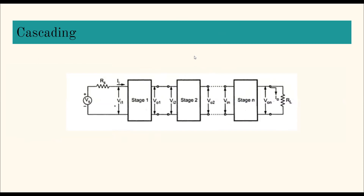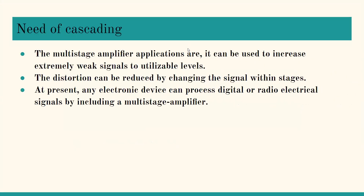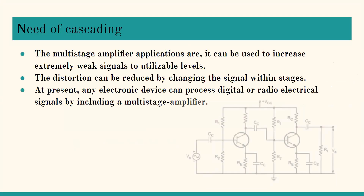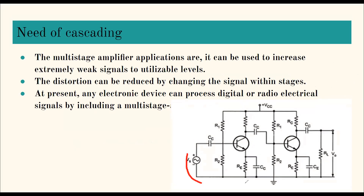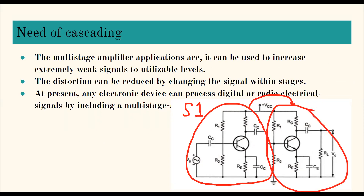A single stage CE amplifier is one stage. When this single stage is duplicated and cascaded, it becomes a two-stage amplifier. Looking at the circuit, Stage 1 connects to Stage 2 via a resistor and capacitor going to the base — so this connection uses RC coupling, making it an RC coupled amplifier. The output of one stage is connected to the input of the next stage through resistance and capacitor.